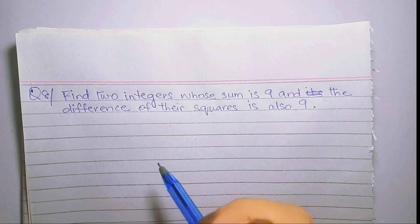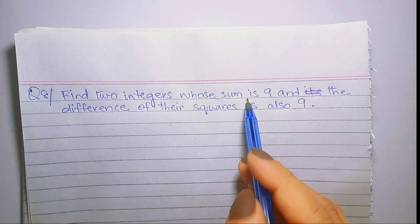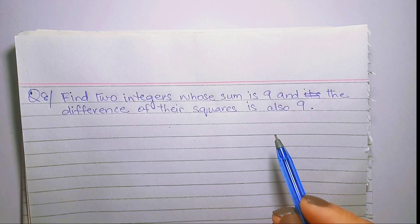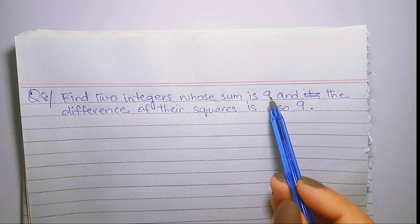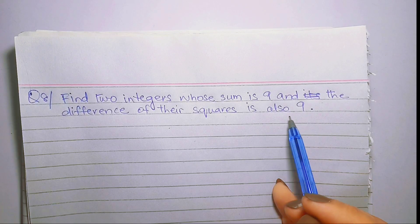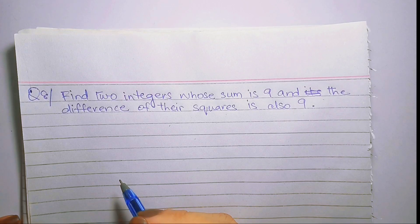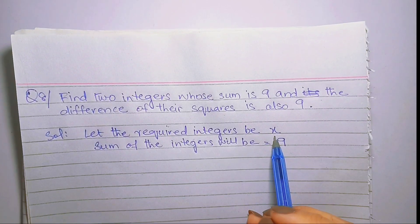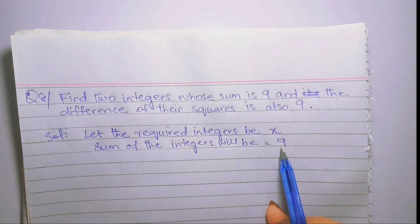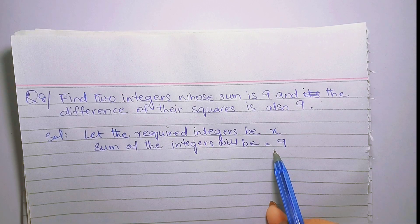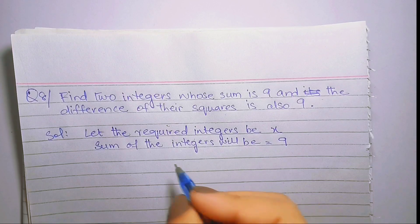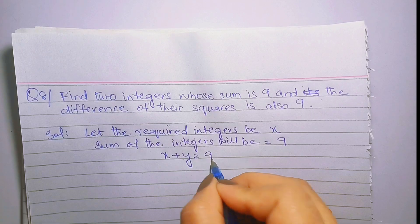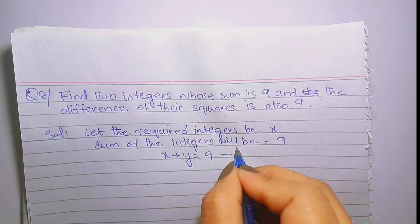Question number 8: Find two integers whose sum is 9 and the difference of the squares is also 9। यानि two integers find करने हैं जिनका sum 9 है और जिनके squares का फर्क भी 9 है। Let the required integers be x and y।